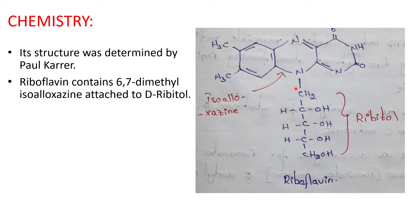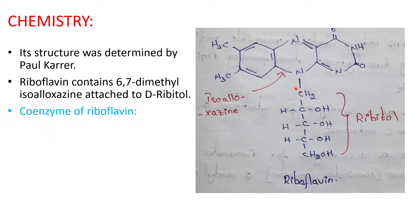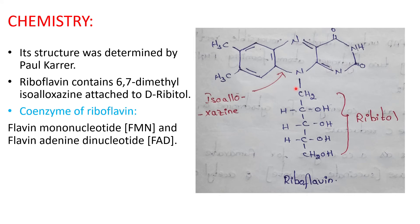Riboflavin also has coenzymes: FMN and FAD. FMN means flavin mononucleotide and FAD means flavin adenine dinucleotide. These are the coenzymes of riboflavin.